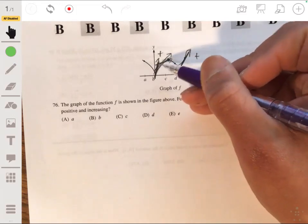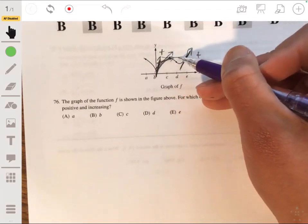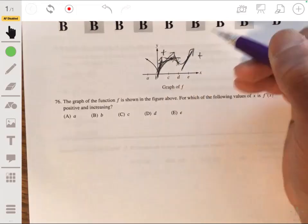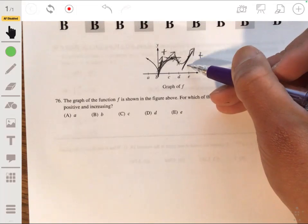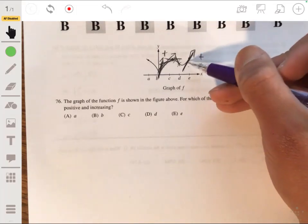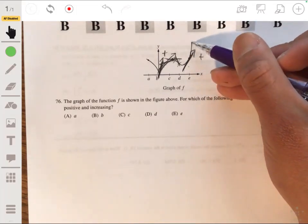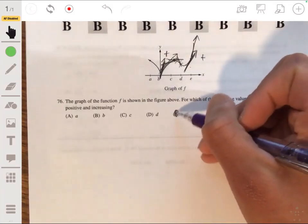The derivative isn't increasing. It's actually decreasing because eventually it gets to zero and it becomes negative. So it's not going to be b, but it's actually going to be e because at e, it is positive, but you can see the graph gets more and more steep, meaning that the derivative is increasing. So the answer is e.